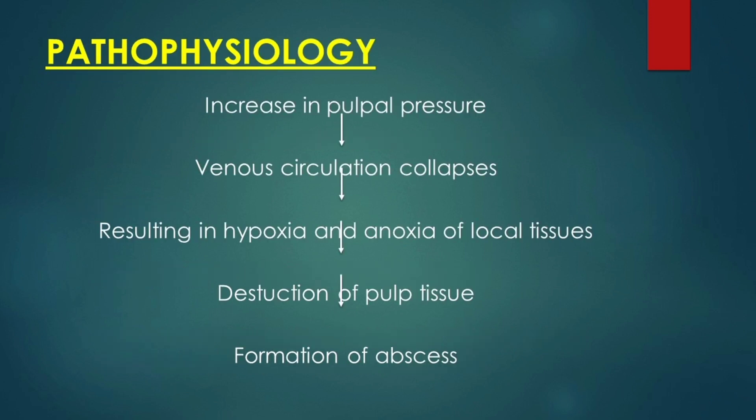Firstly, tissue at the surface of swelling appears taut and inflamed, and the pus starts to form underneath. The pulpal pressure increases, which causes venous circulation collapse resulting in hypoxia and anoxia of local tissues, which in turn causes destruction of pulpal tissue and finally formation of pulpal abscess.